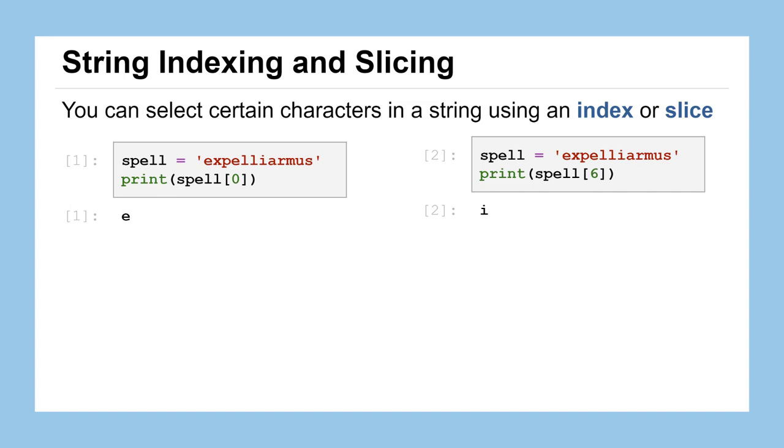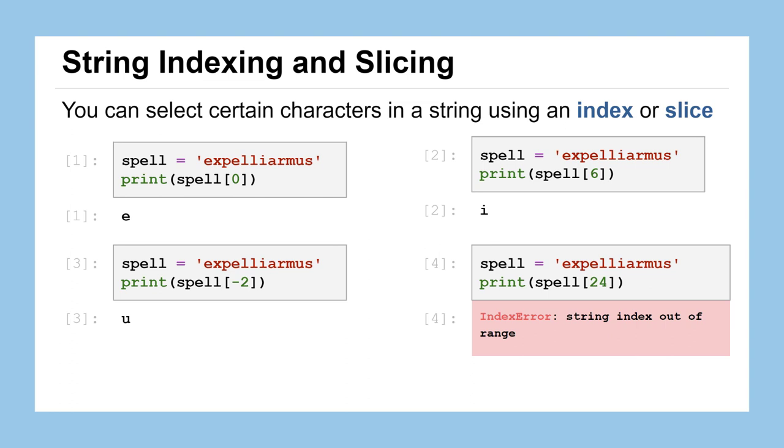Now you can tell just by me counting it out, sometimes selecting characters that are towards the end of a string might take a while for you to figure out what the index exactly is. So we can also use negative indexes to work our way from the back. That S at the end of expelliarmus would be at index negative one, and the U at the end of expelliarmus would be at negative two. If you specify an index that is too big, so here we did spell indexed to 24, there are not 24 indices in the string spell, you're going to get what's called an index error, and it'll give you a little bit of information there. It'll say string index out of range, meaning you have tried to go to that position in that string that does not exist.